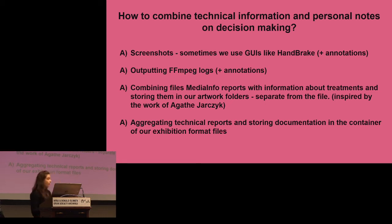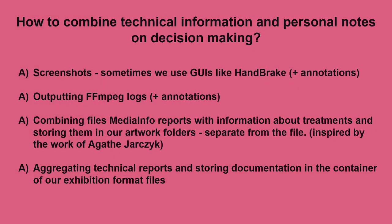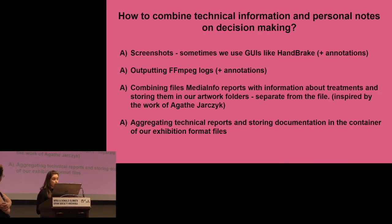Here are some of the options we are considering. Screenshots — as we have explained, sometimes we use GUIs like Handbrake, and perhaps we should also make annotations. We're also thinking about outputting FFmpeg logs with annotations to identify the exact information we need. Combining MediaInfo reports with information about treatments and storing them in the artwork folders — separate from the file storage — and aggregating technical reports and storing documentation in the container of our exhibition format files. Although we have so many different codecs and containers in the collection, this is with the hope of being able to extract data once we ingest everything into our future high-value digital asset storage. We believe these methods, individually or combined depending on the media being prepared, will help us link a specific file back to the artwork.